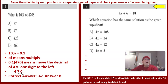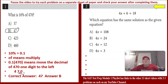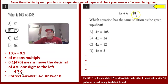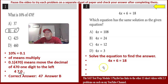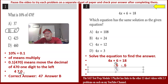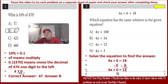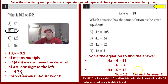Most people say that's easy. Now let's go to number 2. It says: which equation has the same solution as the given equation? You'll use the subtraction property of equality — subtract 6 from both sides. We get 4x plus 0 equals 12, which is 4x equals 12, which is answer C.